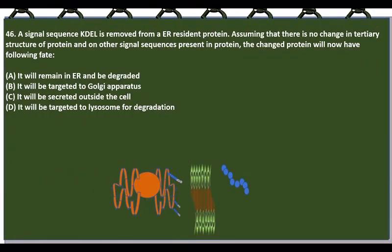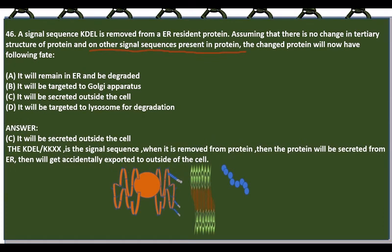If the KDEL sequence is removed from an ER resident protein, assuming no change in tertiary structure and no other signal sequence, the protein will now be secreted outside the cell. KDEL (also known as KKXS or KXXX) is a signal sequence that causes the protein to re-enter the cell when it is accidentally exported. Without KDEL, once the protein moves outside the bilayer, it is gone and cannot be retrieved.